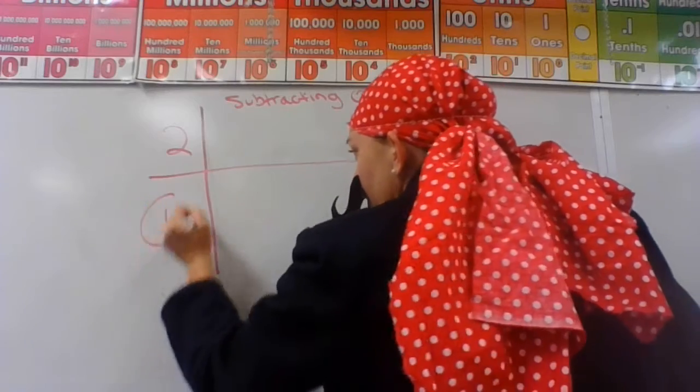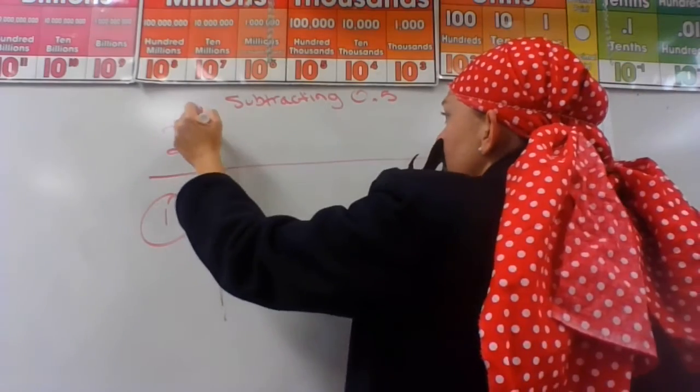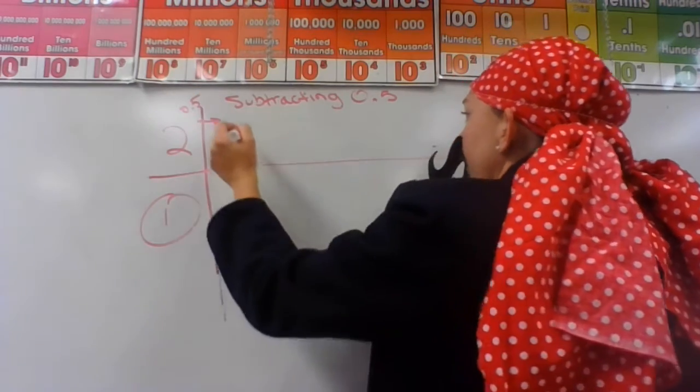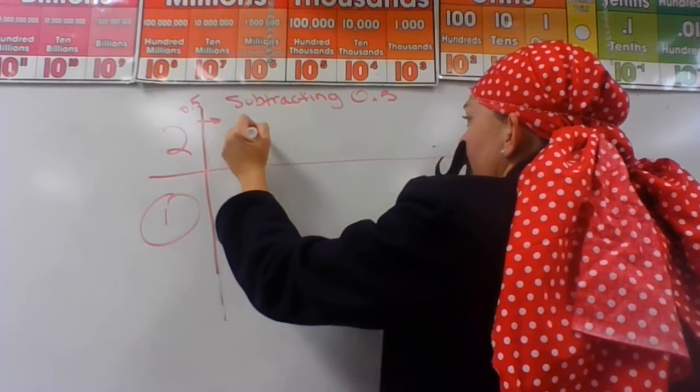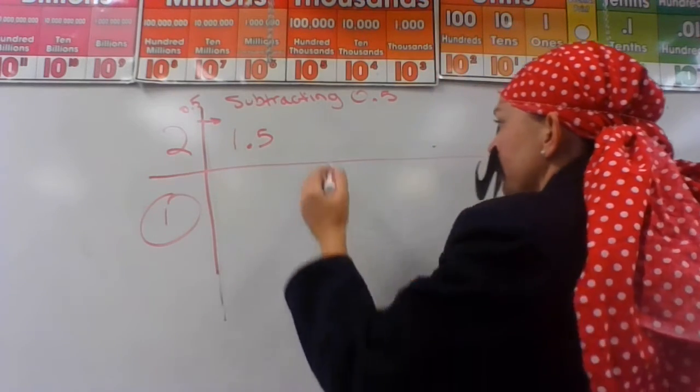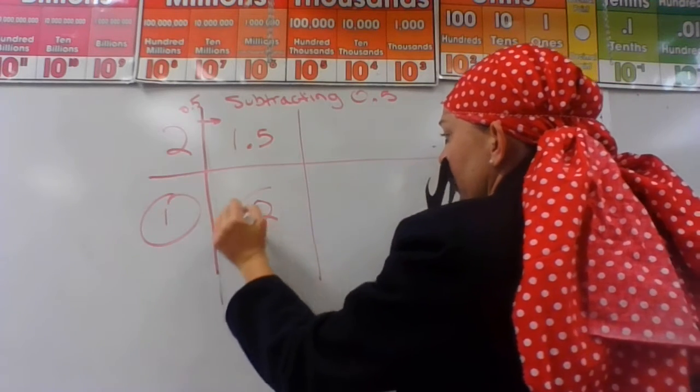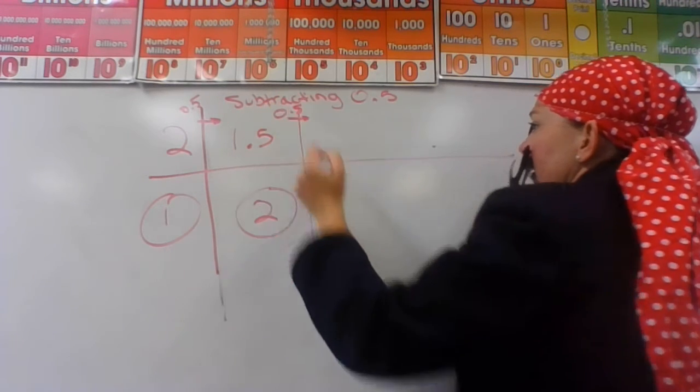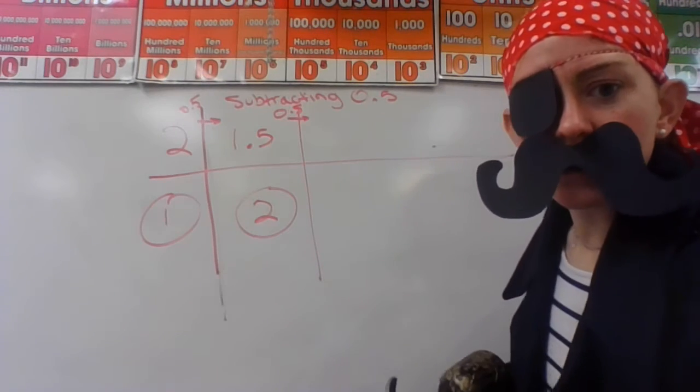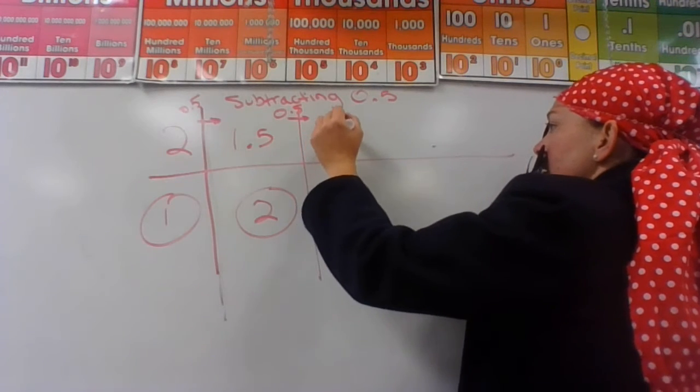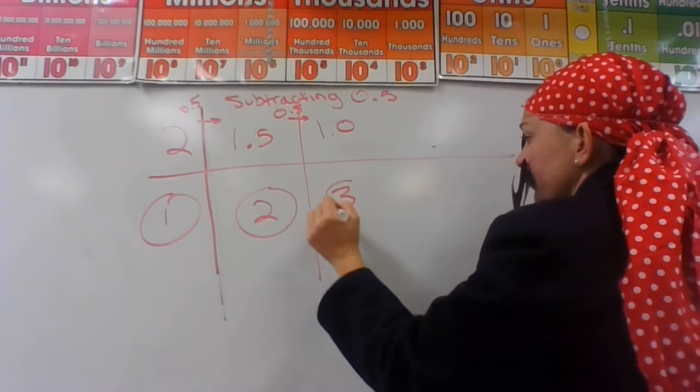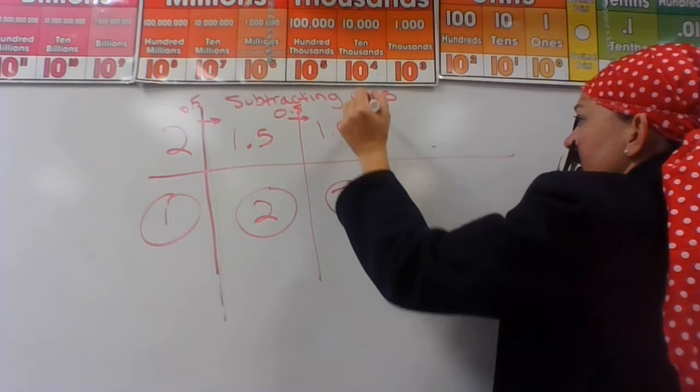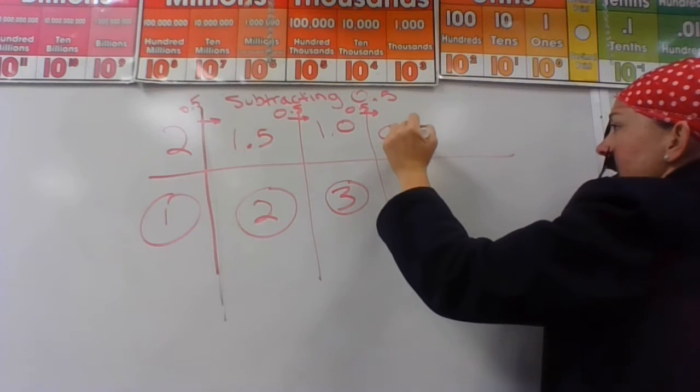So our first term is two. If we subtract zero decimal five, also known as five tenths, I'll have one decimal five, known as one and five tenths. That's our second term. And then I subtract five tenths again, and I will be left with one and zero tenths. That's our third term. And I subtract five tenths again, and I have zero decimal five.